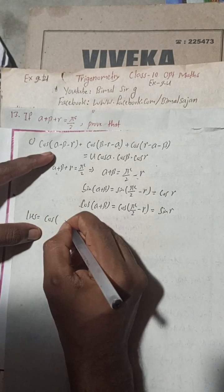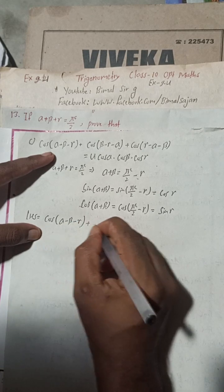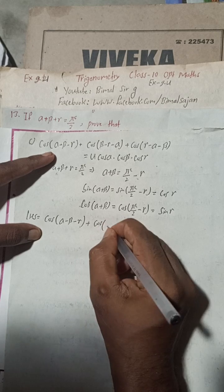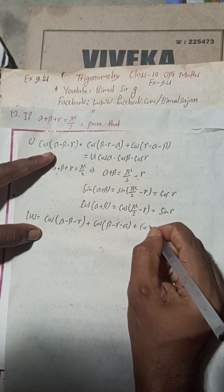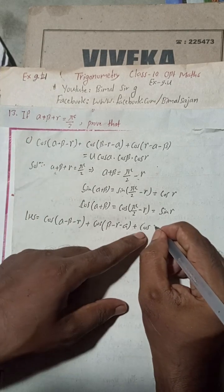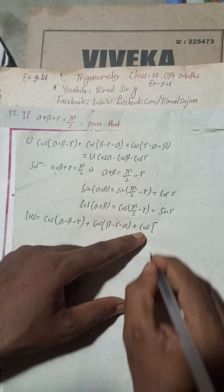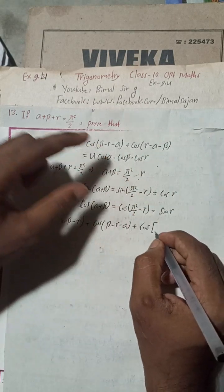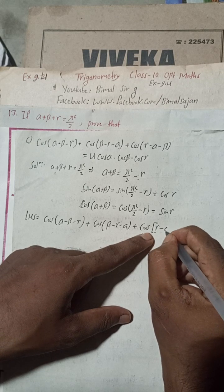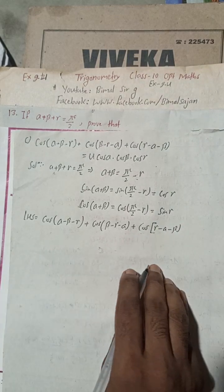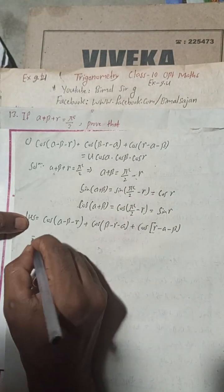Now for the LHS part, LHS equals cos(alpha minus beta minus gamma) plus cos(beta minus gamma minus alpha) plus cos(gamma minus alpha minus beta). I will now work on this LHS expression.